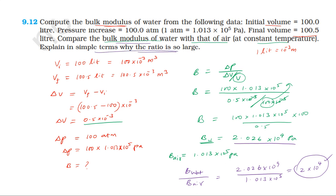Air is easily compressible, while water is not. Compressibility is higher for air, and since bulk modulus is the reciprocal of compressibility, a higher compressibility means a lower bulk modulus. That is why air has a much lower bulk modulus compared to water, explaining the large ratio of approximately 2 × 10⁴.